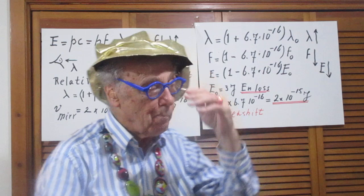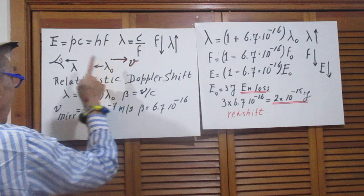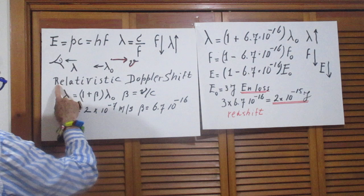Okay, so it radiates a wavelength lambda zero, therefore a frequency F zero. What I receive here is a different wavelength. I receive lambda and I can calculate what that lambda is using the relation for relativistic Doppler shift.